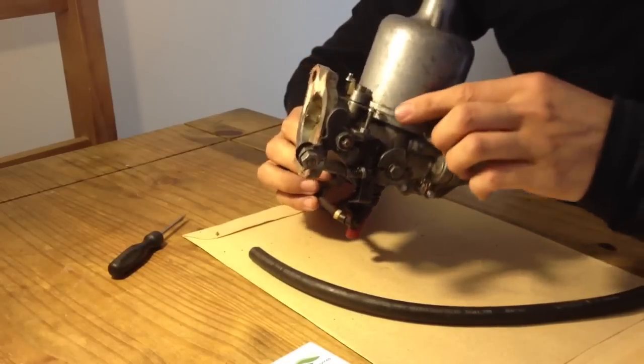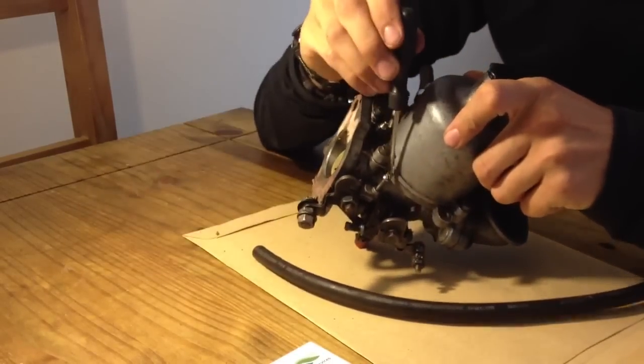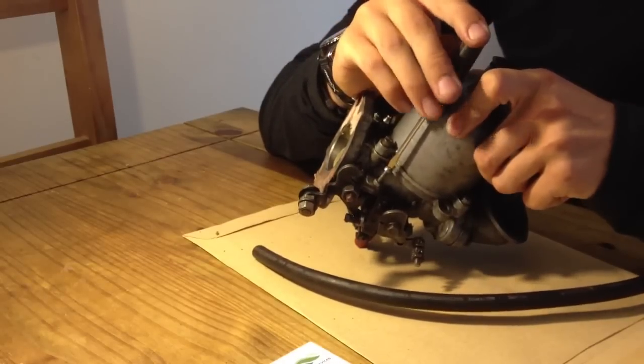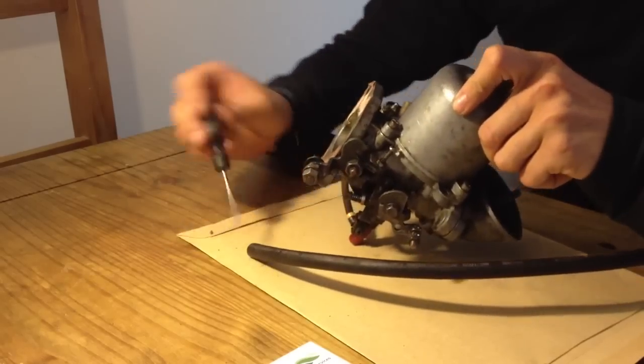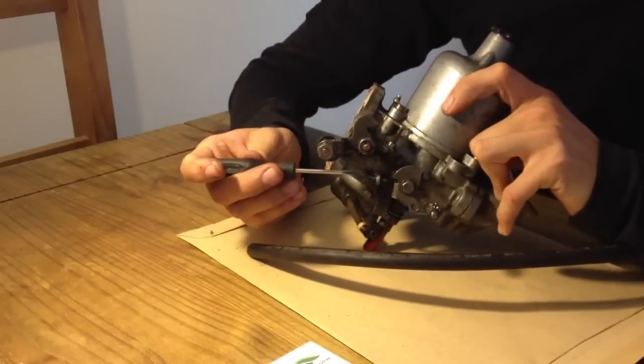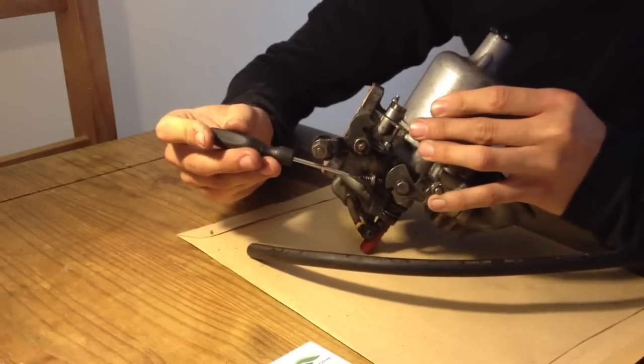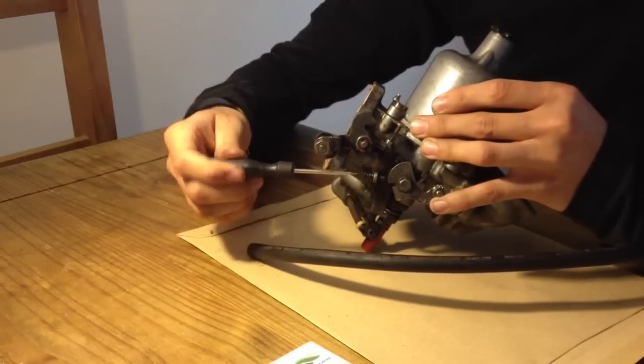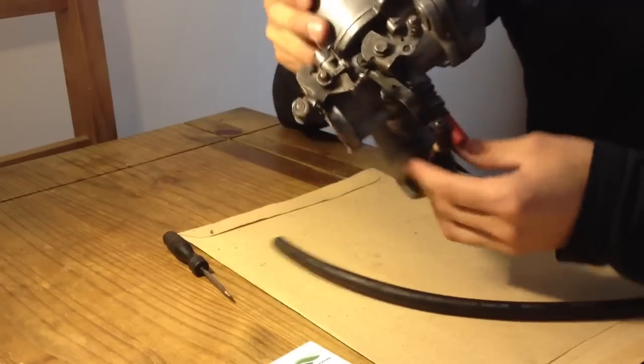Now, we have an idle screw adjustment here which you would adjust either in, screw it down in to increase the idle speed, you would unscrew it to reduce the idle speed. And similar here we have the fast idle screw. This functions against the choke lever cam here. So again, screw it in to increase the speed, screw it out to reduce the fast idle speed.